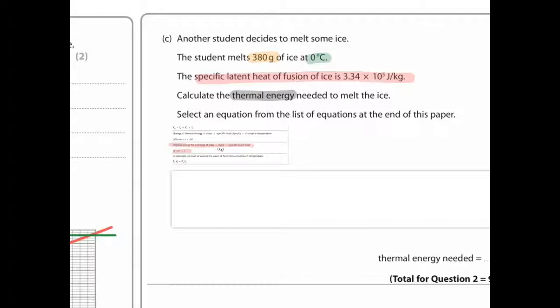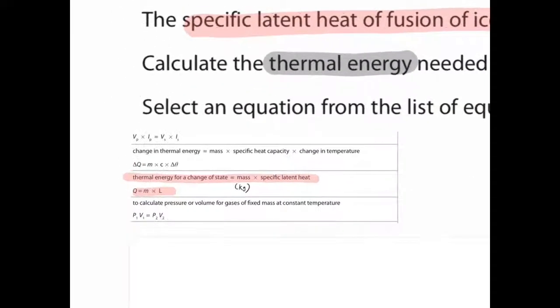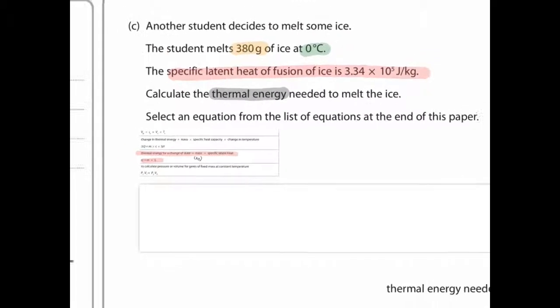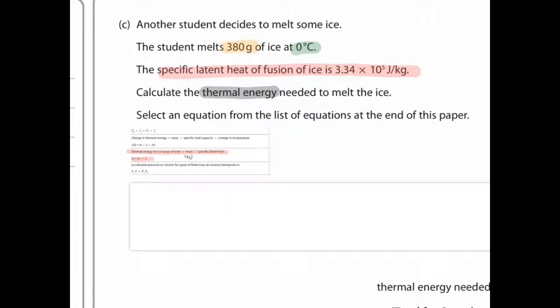Select an equation from the list of equations at the end of this paper. So whenever you have to select an equation, just look at what you have. You have a temperature, you have mass in grams, and you have a specific latent heat of fusion. And you're trying to work out thermal energy. So what's the most fitting equation? Well, here it says thermal energy for change of state equals mass, which we've got, and specific latent heat of fusion, which we've got, and we're trying to work out thermal energy. So that's the equation.